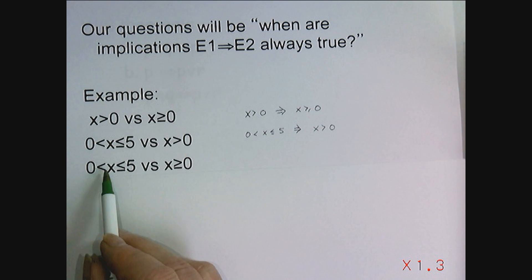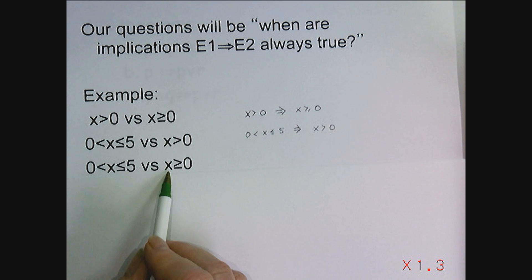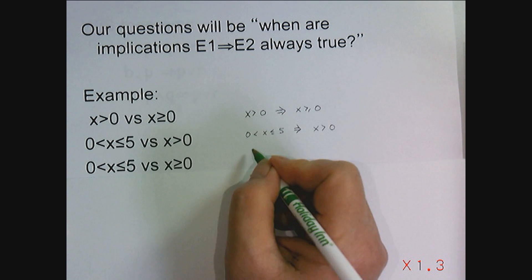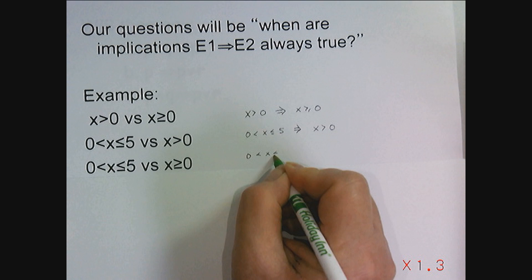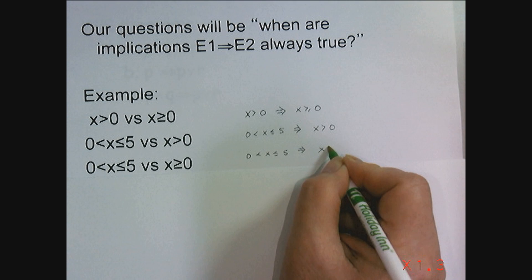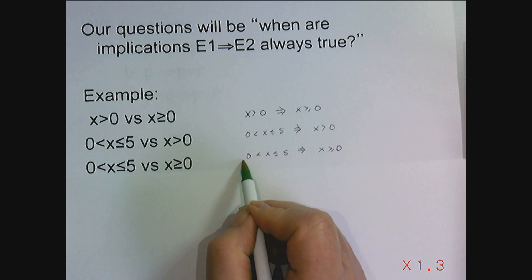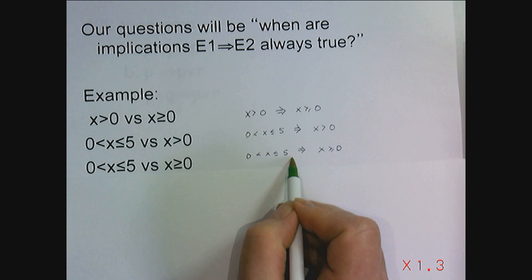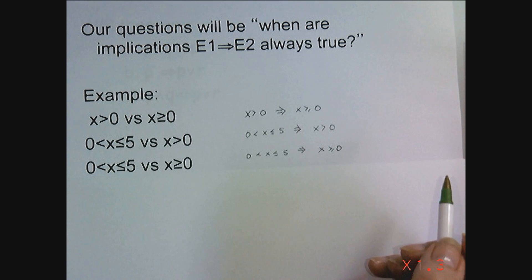What if I want to compare x between zero and five, not including zero, versus x greater than or equal to zero? Anytime I pick a number between zero and five, not including zero, I will get a number that is greater than or equal to zero. So again, this expression is stronger than the expression x being greater than or equal to zero.